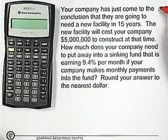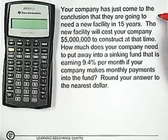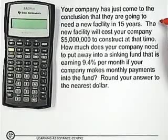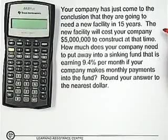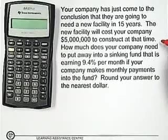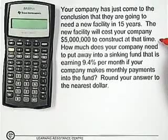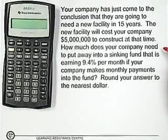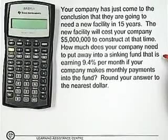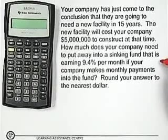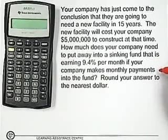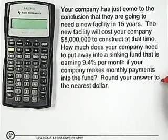Your company has just come to the conclusion that they are going to need a new facility in 15 years. The new facility will cost your company $5 million to construct at that time. How much does your company need to put away into a sinking fund that is earning 9.4% per month if your company makes monthly payments into the fund? Round your answer to the nearest dollar.